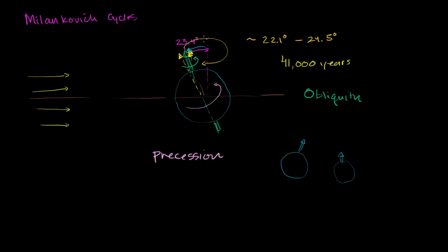Precession describes where we are in the wobble. This is a little hard to visualize at first. Just as it takes a long time for the inclination to change from minimum to maximum and back, it takes a huge amount of time for Earth's precession to complete a full cycle. For this arrow to trace out an entire loop takes 26,000 years — a complete cycle of precession. Now I want to think about how that precession affects our seasons and how we think about the year.